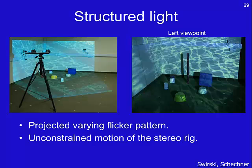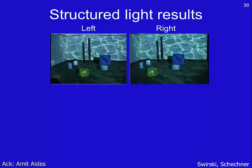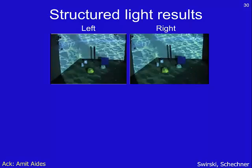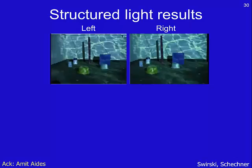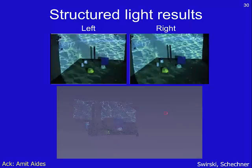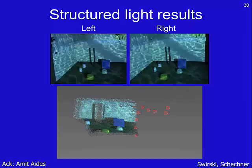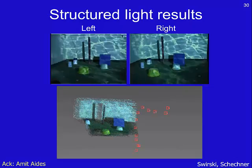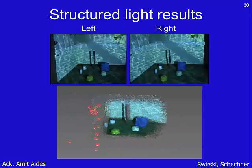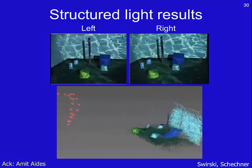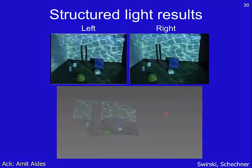Let's see some results from a structured light experiment conducted in a lab. A simulation of underwater flicker was projected on the scene. The stereo rig was discretely moved, which is why the movie is a bit bumpy. This is the reconstructed 3D structure, with viewpoints shown in red. You can clearly see the walls, the poles, and the boxes, and may notice the alignment of the point clouds.